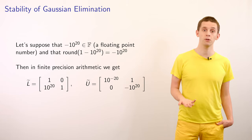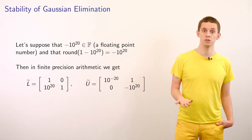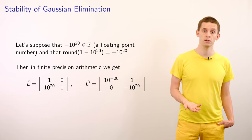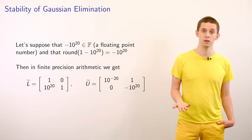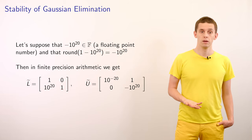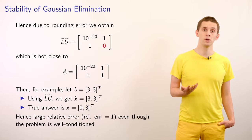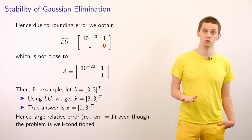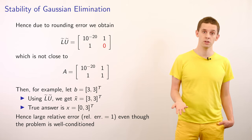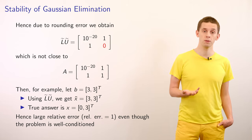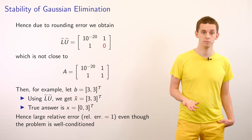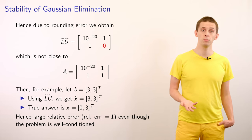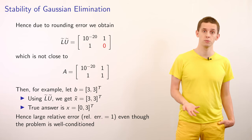In finite precision arithmetic, our LU factors would look like L-tilde — which is 1, 0, 10^21, 1 — and U-tilde — which is 10^-20, 1, 0, minus 10^20 — so that single 1 has been eliminated. Due to rounding error, the product of L-tilde times U-tilde would equal 10^-20, 1, 1, 0, which is not close to the matrix we started with. This could immediately lead to problems when solving linear systems using these factors.